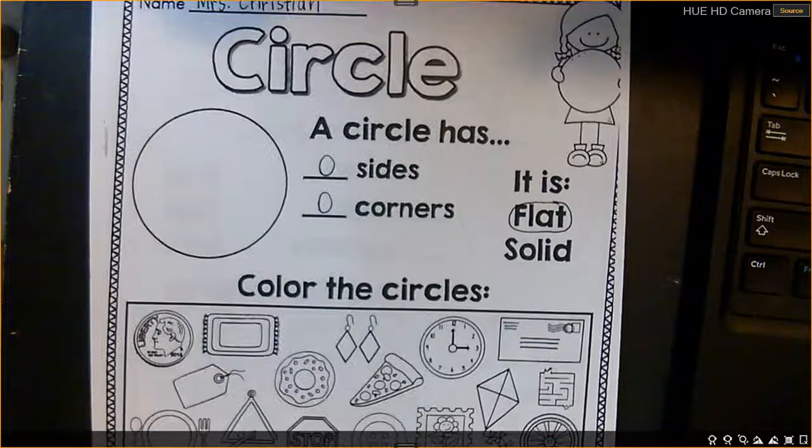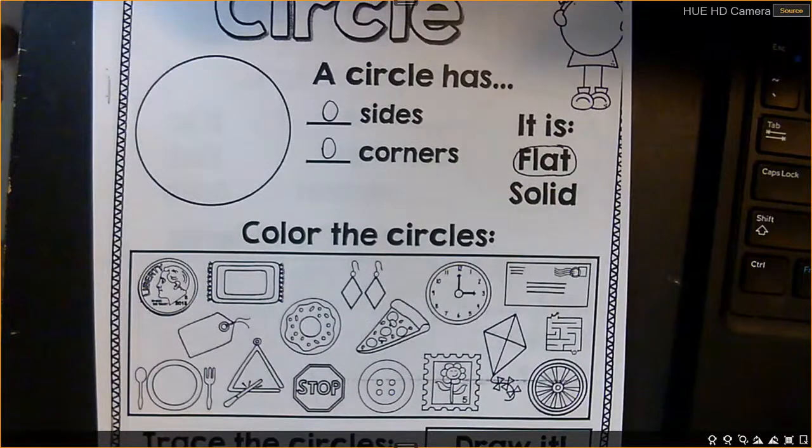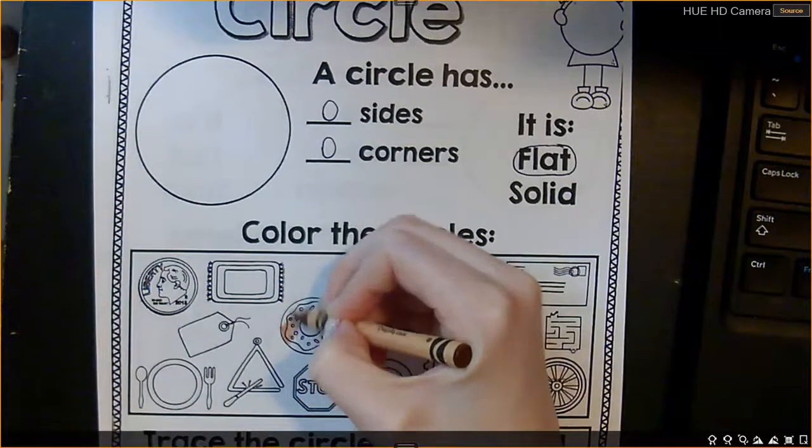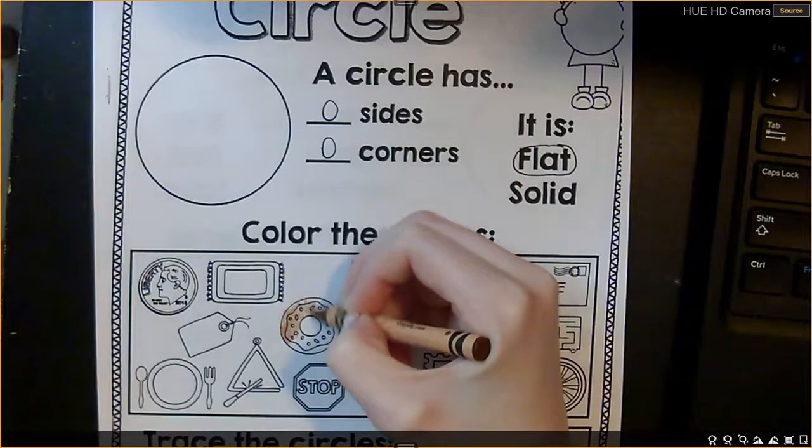Down here it says to color the circles. So you're going to get a crayon and you are going to color all of the circles. So I see a donut is a circle.